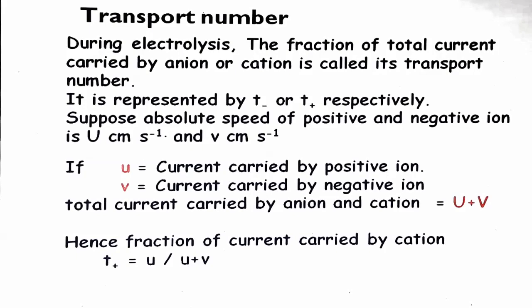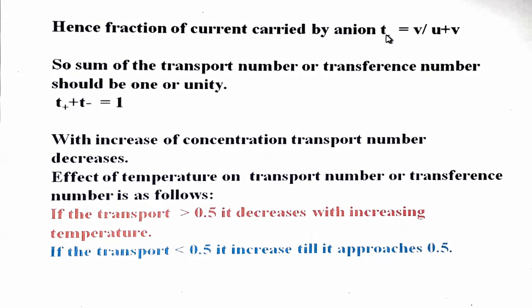In the same way, the transference number of the anion, T-minus, is equal to the fraction of current carried by the anion upon total current, that is V divided by U plus V. The sum of transference numbers should equal 1 or unity, because the fraction of total current carried by positive ions plus the fraction carried by negative ions must equal the total current.